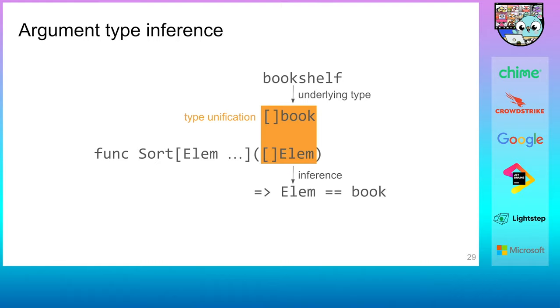Since bookshelf is a defined type and slice of element is not, unification would fail right away. So we use the underlying type of bookshelf instead. Now we have two types, slice of book and slice of element, that match in structure. Furthermore, book matches with element, and thus we can infer that element should indeed be book. Thus the type argument inference has successfully deduced in this case that the type argument for element should be book. In general, type unification is done with all and across all ordinary arguments and respective generic parameters. Type inference fails if any of the unification steps fails.